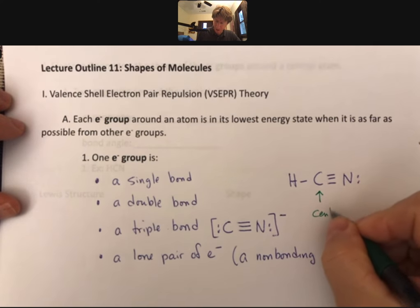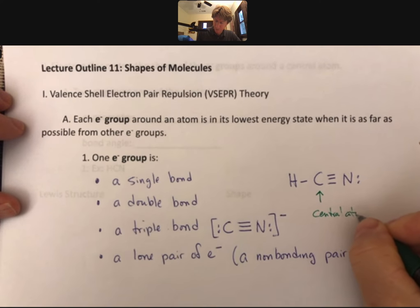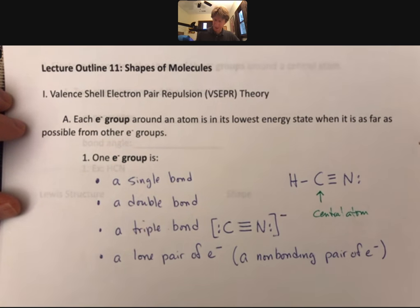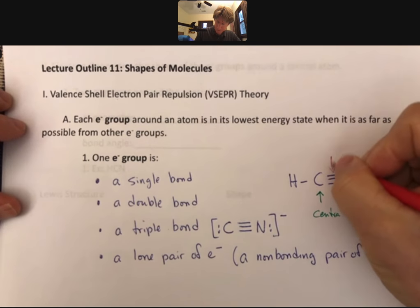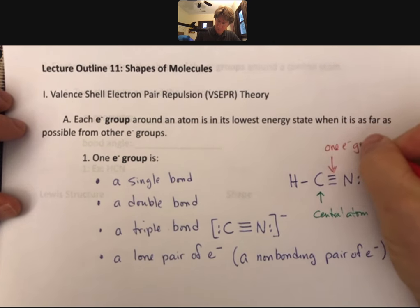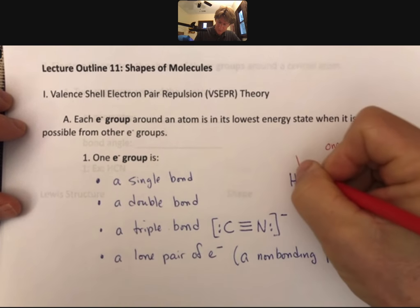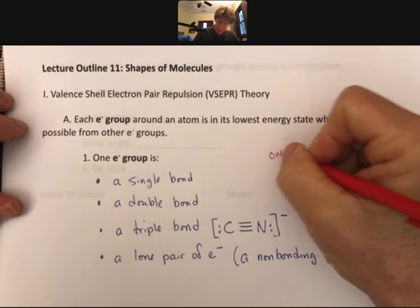So let's see, this central atom: a triple bond is one electron group and a single bond is one electron group. And so one electron group plus one electron group is two electron groups.